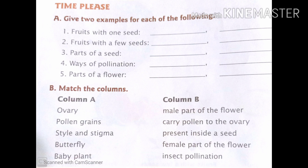Students, there is a very interesting homework. First, give two examples for each of the following: one, fruits with one seed; two, fruits with a few seeds; three, parts of a seed; four, ways of pollination; and five, parts of a flower. Second, match the following. I am sure you would love doing it.